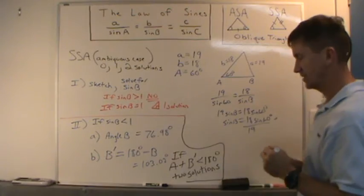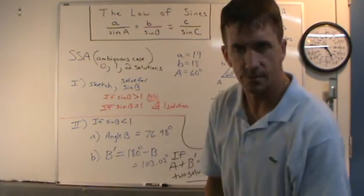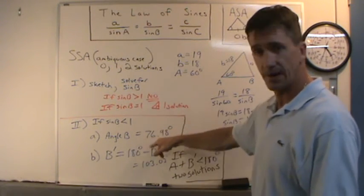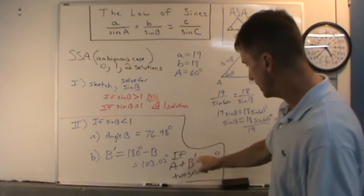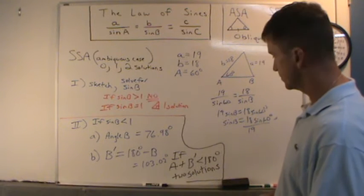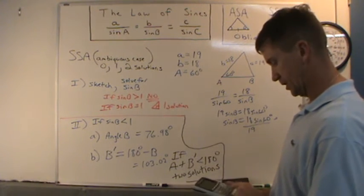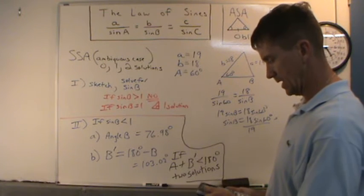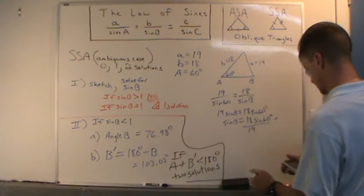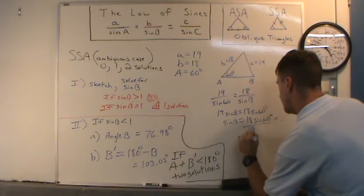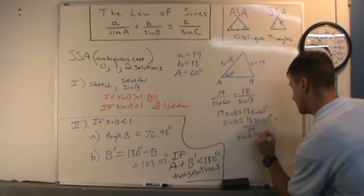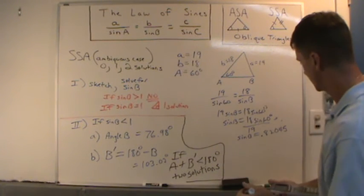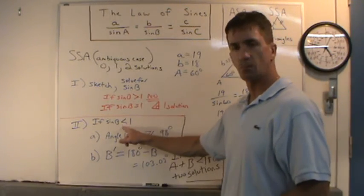So sine B equals 18 times sine(60°) divided by 19. We check: is it greater than 1 (no solution), equal to 1 (right triangle, one solution), or less than 1? On the calculator: 18 times sine(60), divided by 19, gives approximately 0.82045. It's less than 1, so we move on — there's either one or two solutions.